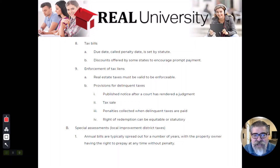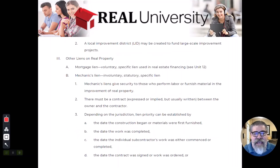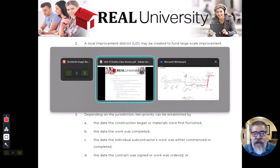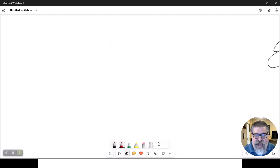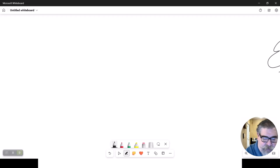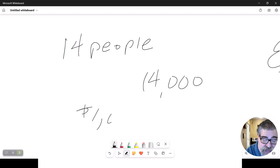And that special assessment tax can be assessed in a couple of different ways. The most common is usually what they call just a prorated tax, meaning this sewer is going to help out 14 people. There are 14 houses, and the cost is $14,000, so each person is going to pay $1,000.